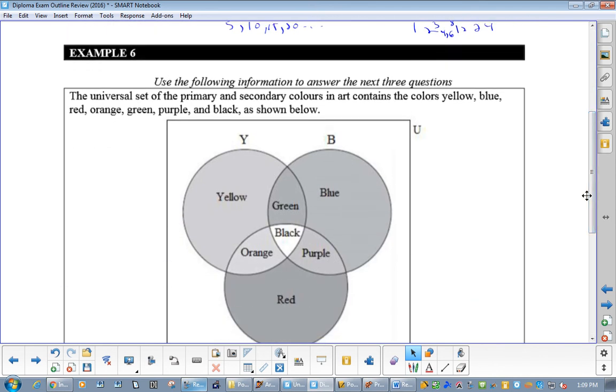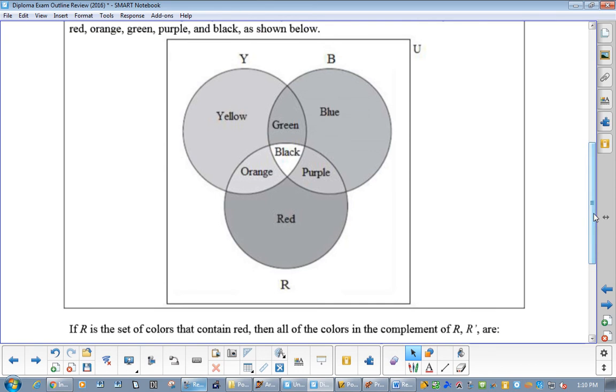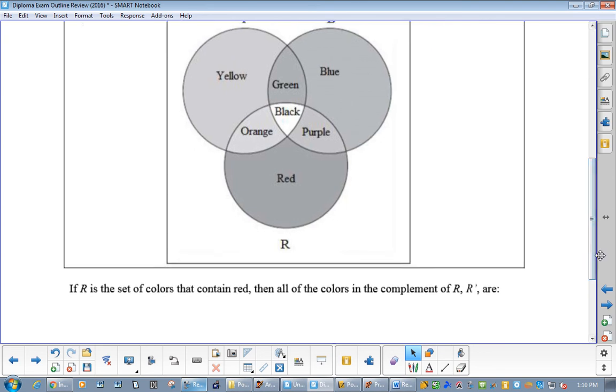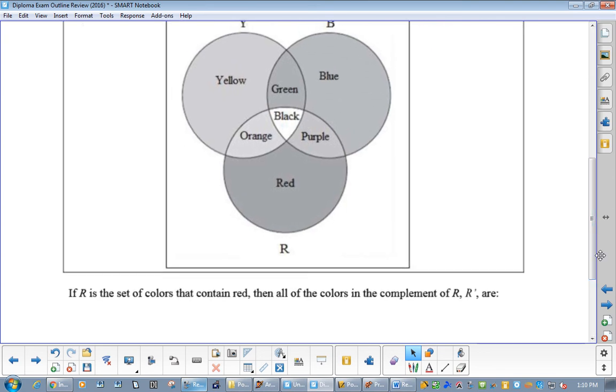The universal set of primary and secondary colors in art contains the colors yellow, blue, red, orange, green, purple, and black, as shown below. So, if R is the set of colors that contain red, then what is the complement of R? In other words, what is R prime? This is the complement.